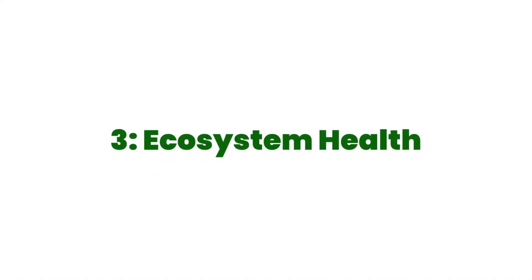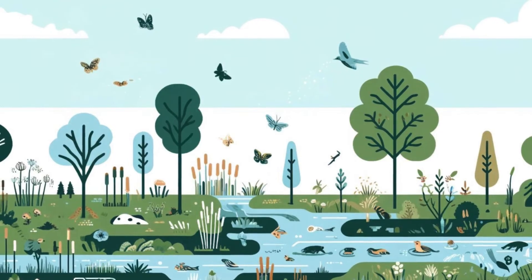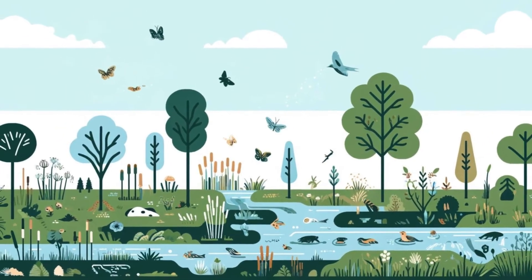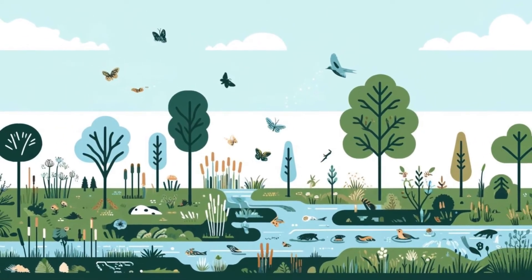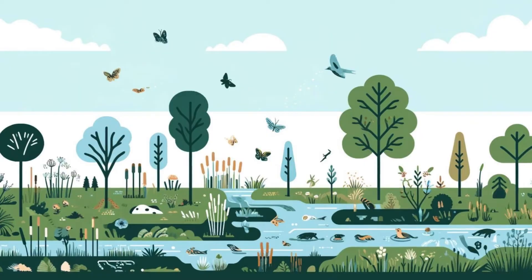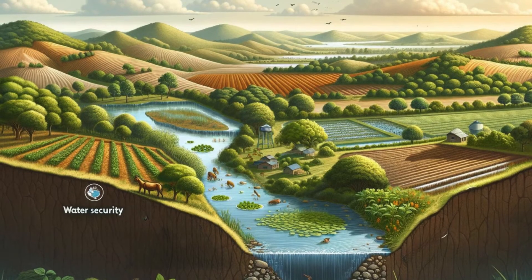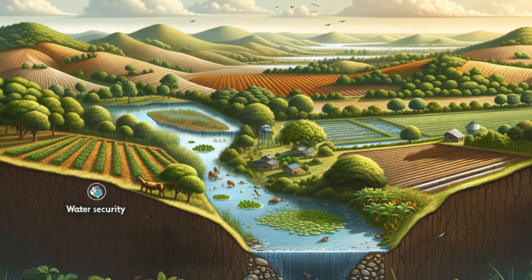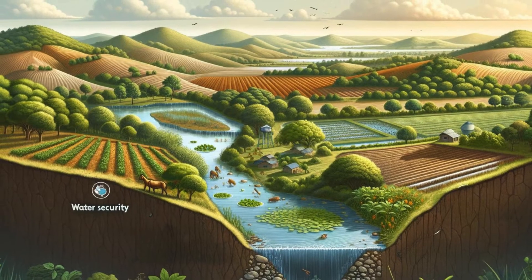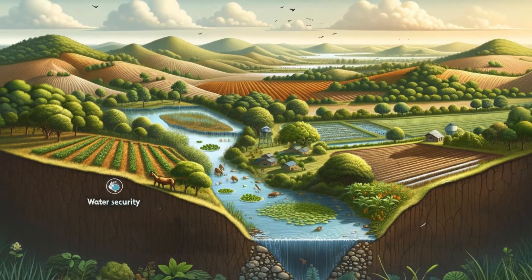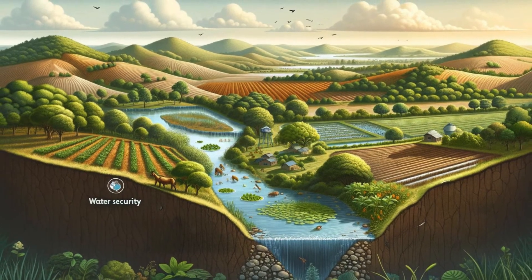Ecosystem health — healthy watersheds support diverse ecosystems, providing habitat for plants and animals. Climate resilience — watershed management helps in mitigating the effects of climate change by enhancing water security and ecosystem stability.